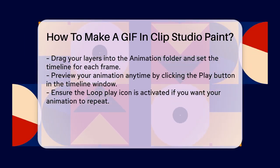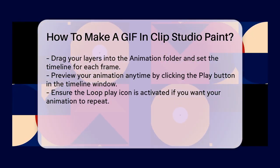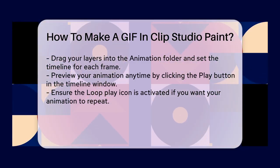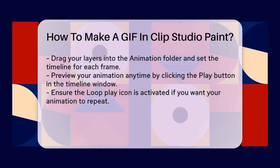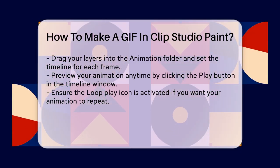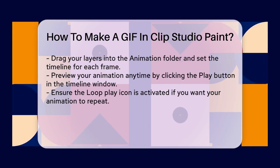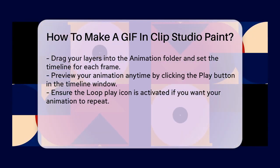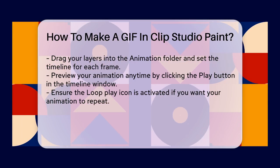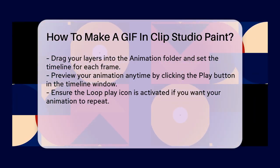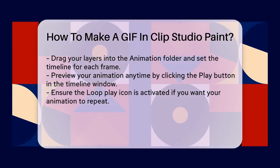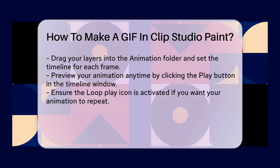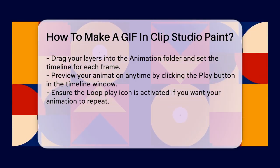To add animation, create an animation folder by going to Animation > New Animation Layer > Animation Folder. This folder will hold all your animated frames. You can then drag your layers into this folder and set the timeline for each frame. For example, if you're animating a bell that moves back and forth, you'll need to set the layer switch every few frames to create the motion.